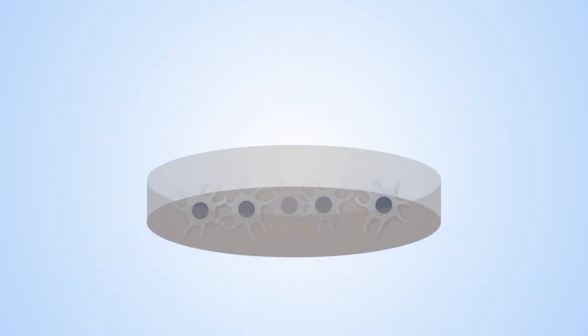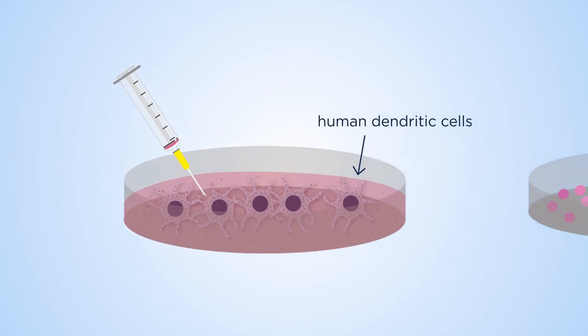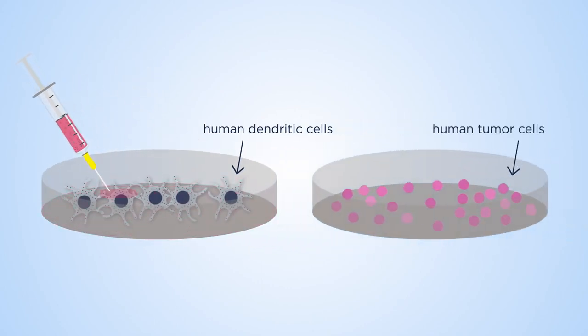The researchers tested the nano-vaccine on dendritic cells from patients and found similar responses, including an increase in antigens and the release of products that induce human tumours suicide.